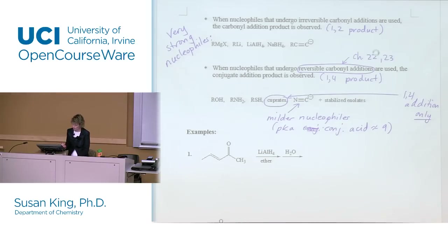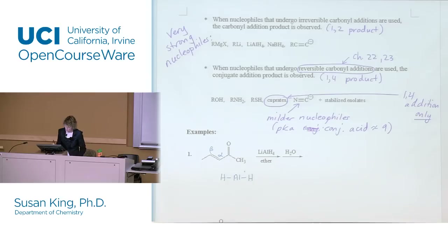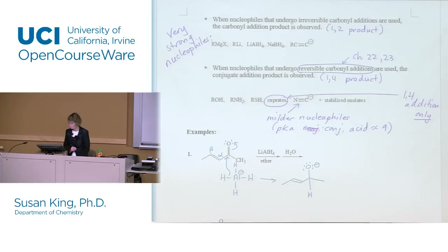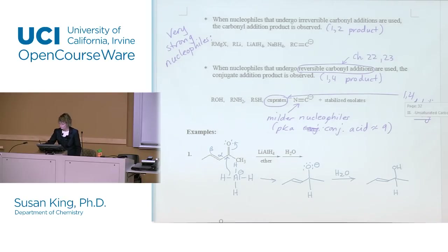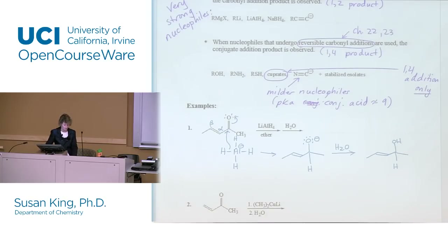Lithium aluminum hydride does irreversible carbonyl addition, so once it attacks the carbonyl — which is faster — it can't come back off again. So we're going to get 1,2-addition, no 1,4-addition. Then when we add water in the second step and protonate, the product is an alcohol. All reagents in this chapter except for cuprates are going to do 1,2-addition.